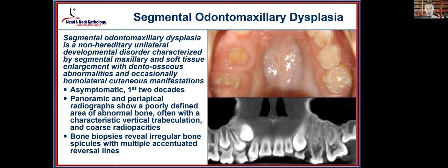Segmental odontomaxillary dysplasia has been included as a non-hereditary but unilateral developmental disorder characterized by maxillary bone and soft tissue involvement, with a homolateral cutaneous manifestation seen in some cases. Radiographically there is a periapical or poorly defined area of abnormal bone, with overgrowth of soft tissue-related elements. When a sample is taken, bone biopsies reveal irregular bone spicules and accentuated reversal lines. It is included because of its tumor-like presentation both radiographically and clinically.